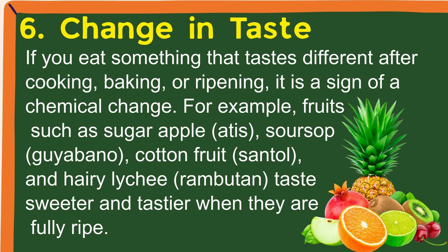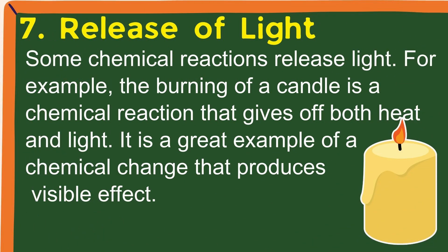6. Change in taste — if you eat something that tastes different after cooking, baking, or ripening, it is a sign of a chemical change. For example, fruits such as sugar apple, sarsap, cotton fruit, and hairy lychee taste sweeter and tastier when they are fully ripe. 7. Release of light — some chemical reactions release light. For example, the burning of a candle is a chemical reaction that gives off both heat and light, and is a great example of a chemical change that produces a visible effect.